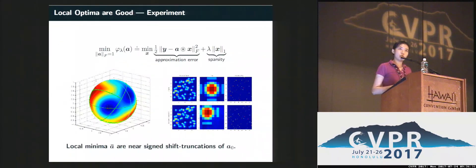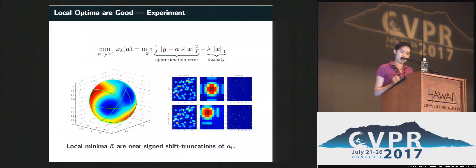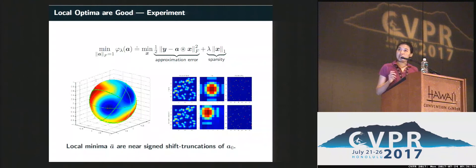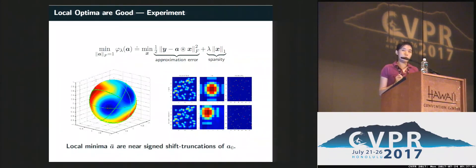We consider the sphere-constrained sparse blind deconvolution problem. By sphere, I mean we assume A0 has unit Frobenius norm. We then minimize the LASSO function — a weighted summation of the approximation error from the convolution and a sparsity measure of the underlying signal. Plotting the objective value on the sphere, you can see two blue blobs corresponding to two local minima. Although the problem is non-convex, looking carefully at those local minima, you find they are actually near shift-truncations of the ground truth.